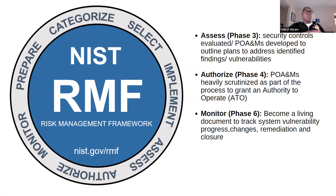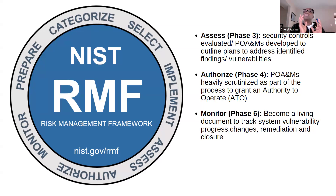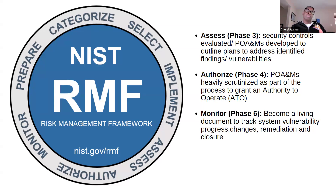This is the NIST RMF process — it begins with prepare. There are three phases where a POAM is prominent. First is the assess phase, which is phase three, where security controls are evaluated and POAMs are developed to outline plans to address things. Then there's phase four, authorize, which is very important because the POAM is one of the primary documents the authorizing official will scrutinize to be sure the system is ready for an authority to operate, or ATO. And then there's the monitor phase, where it becomes the living document that's constantly updated, tracked, and remediated.